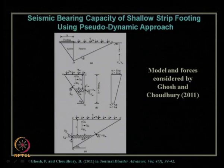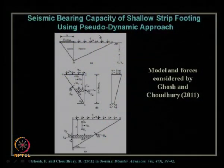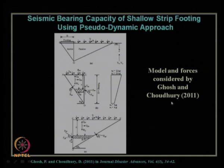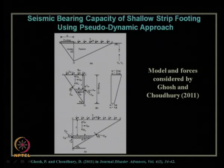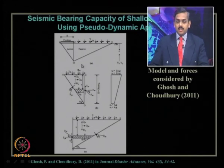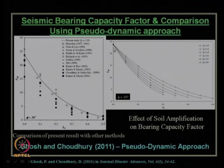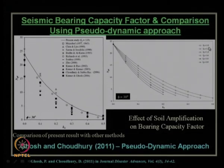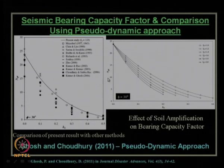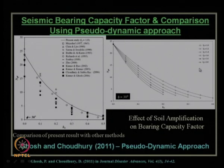In our previous lecture, we also discussed estimating seismic bearing capacity of shallow footing using the pseudo-dynamic approach, proposed first by Ghosh and Choudhury in 2011 in the journal Disaster Advances. Only a two-wedge failure mechanism was considered along with an amplification factor. In the pseudo-dynamic approach, soil amplification can be considered, which significantly reduces seismic bearing capacity factors — something not possible in the conventional pseudo-static approach.